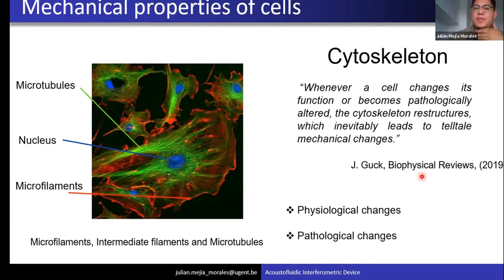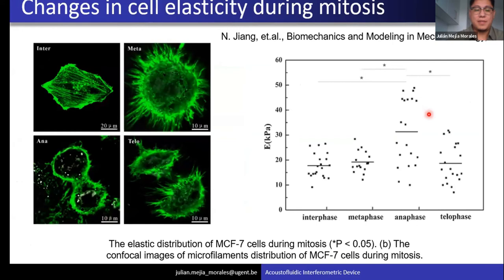I would like to quote Professor Jochen Guck, who says that whenever a cell changes its function or becomes pathologically altered, the cytoskeleton restructures, which inevitably leads to telltale mechanical changes. To exemplify this, I will show this diagram of the mitosis of the cell. You can see that during the anaphase, a clear change in the mechanical properties of the cells occurred. So you can also use mechanical properties to track physiological processes, on top of differentiating among different types of cells.